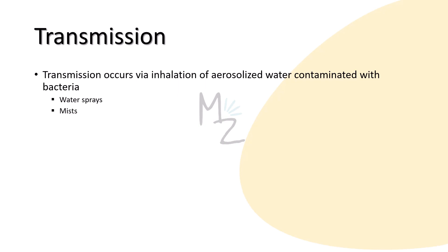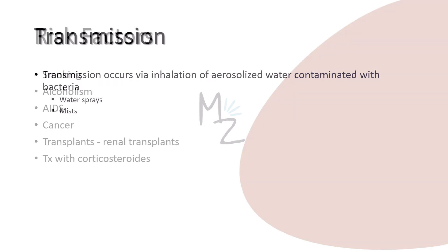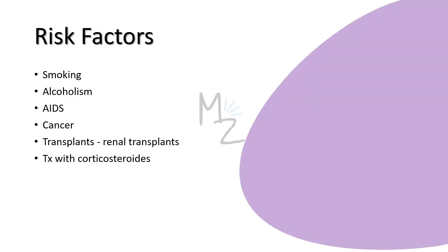Transmission occurs via inhalation of aerosolized water contaminated with Legionella pneumophila — for example, water sprays or fragrant mists. The portal of entry is the respiratory tract. Risk factors associated with Legionella diseases include smoking and alcoholism, AIDS, cancer, patients with transplants (specifically renal transplants), and patients treated with corticosteroids.